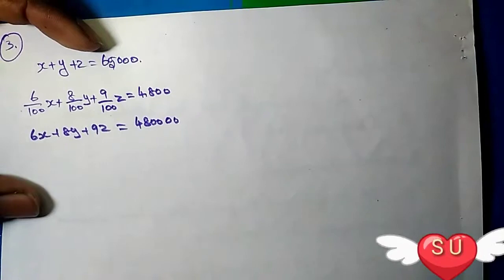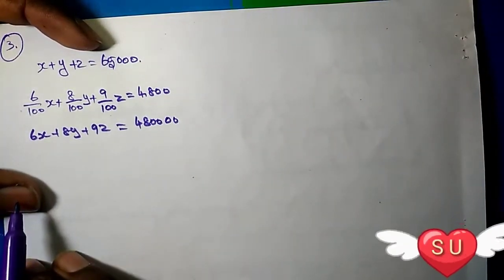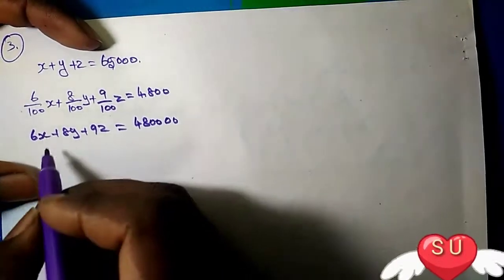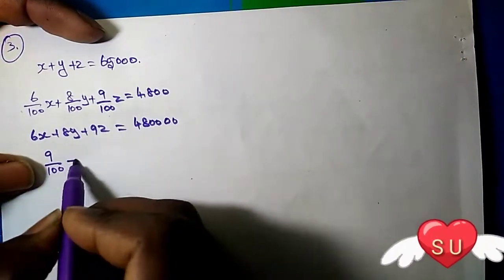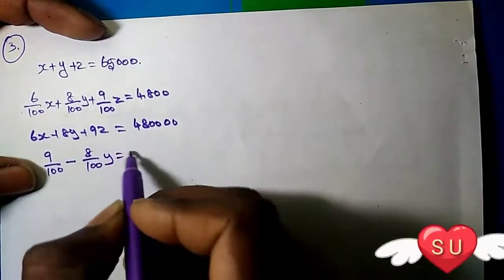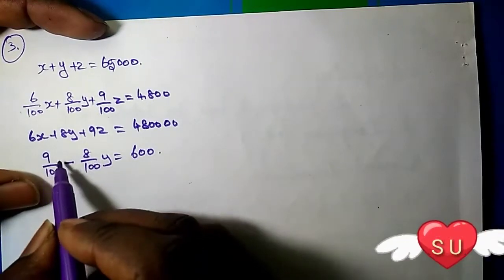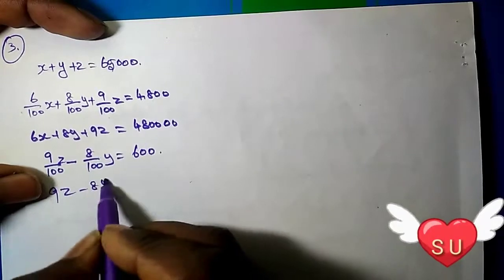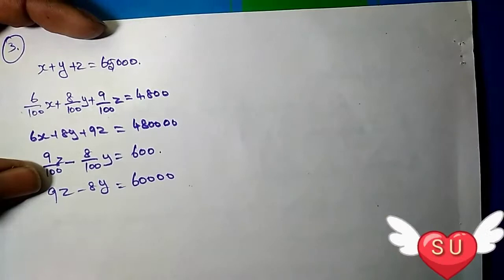Next, the total annual income is 8000, and the income of the third bond is 600 more than from the second bond. So 9 divided by 100 times Z minus 8 divided by 100 times Y equals 600. This gives us 9Z minus 8Y equals 60,000.